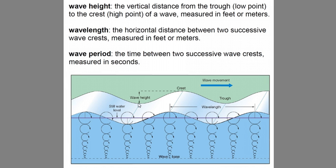Wave height is the vertical distance from the trough of the wave to the crest. Wave length is the horizontal distance between two successive crests. And wave period is the time between successive wave crests, which we measure in seconds. That's an important number — we're going to come back to that.